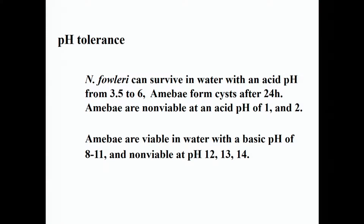In summary, Naegleria fowleri can survive in water with acid pH from about 3.5 to 6, and at neutral pH 7, though they form cysts after 24 hours. They are non-viable at pH 1 and 2. On the basic side, they are viable at pH 8 to 11 but non-viable at 12, 13, and 14. An important benefit of this finding is that it shows us how to produce cysts for further infectivity studies.